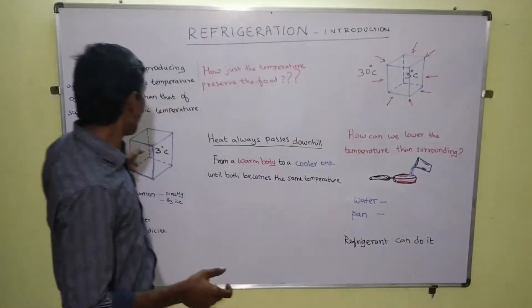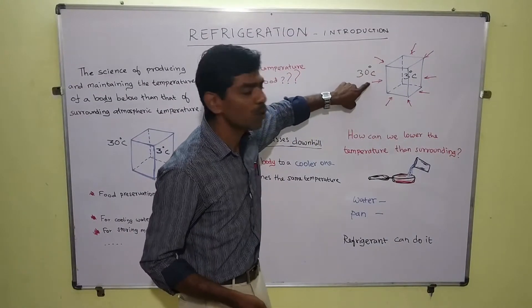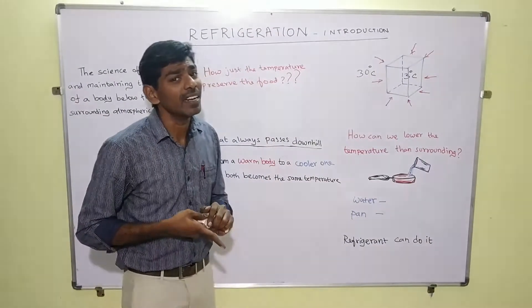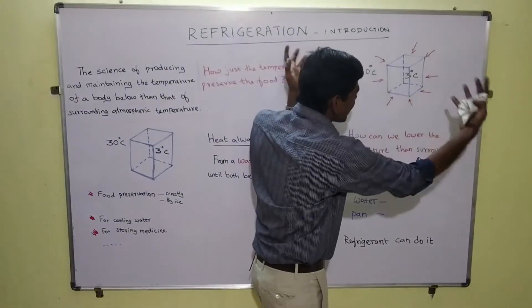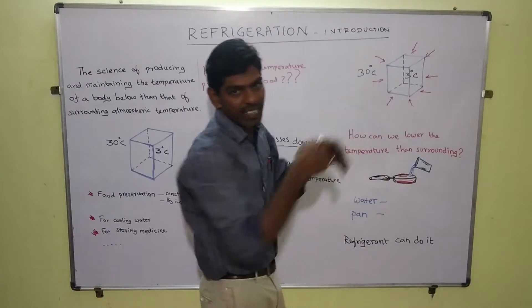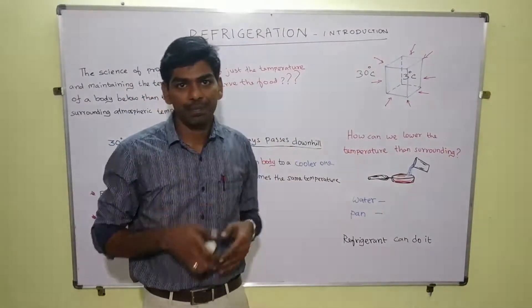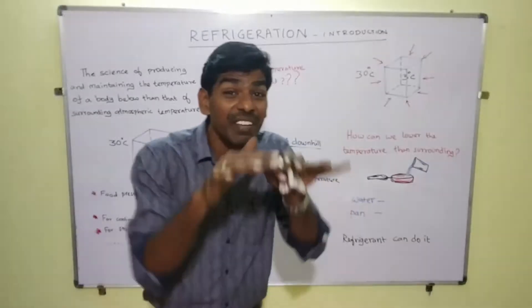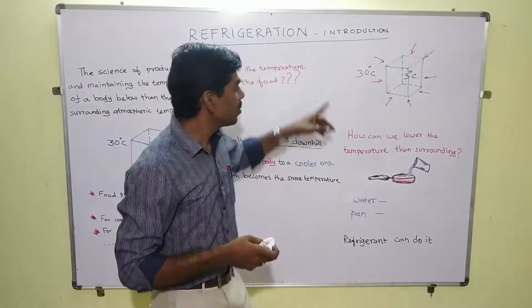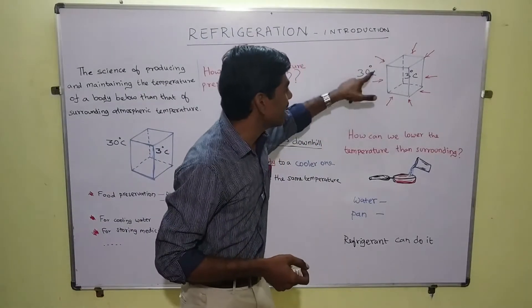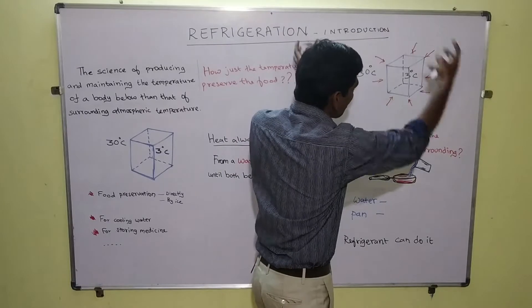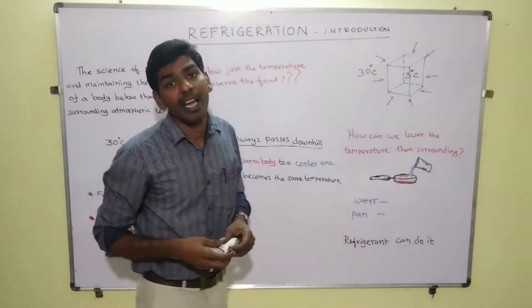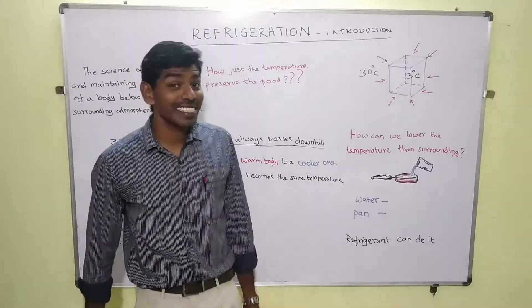In our example, the surrounding temperature is about 30 degrees centigrade and we maintain the refrigerated space at 3 degrees centigrade. So what will happen? From all sides, heat will try to pass inside to equalize the temperature. That is why we study 'producing and maintaining' — we need to produce a temperature and maintain it. The atmospheric heat, being hotter, will always try to get into the cooler system. So the question is: how can we lower the temperature below the surrounding?